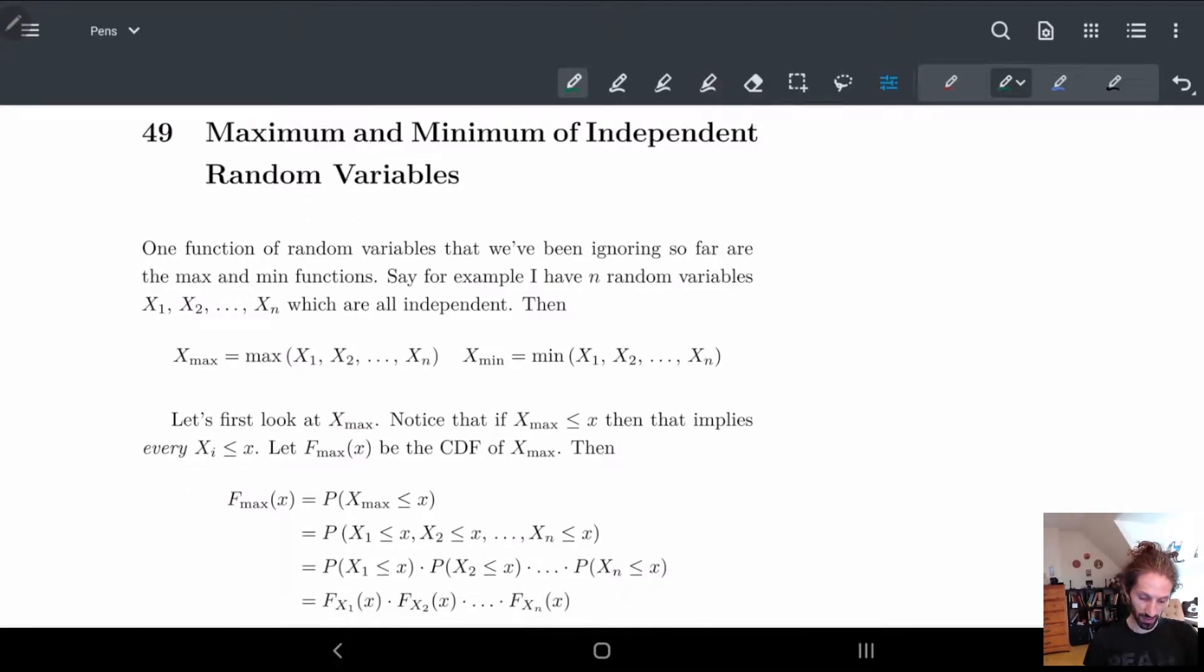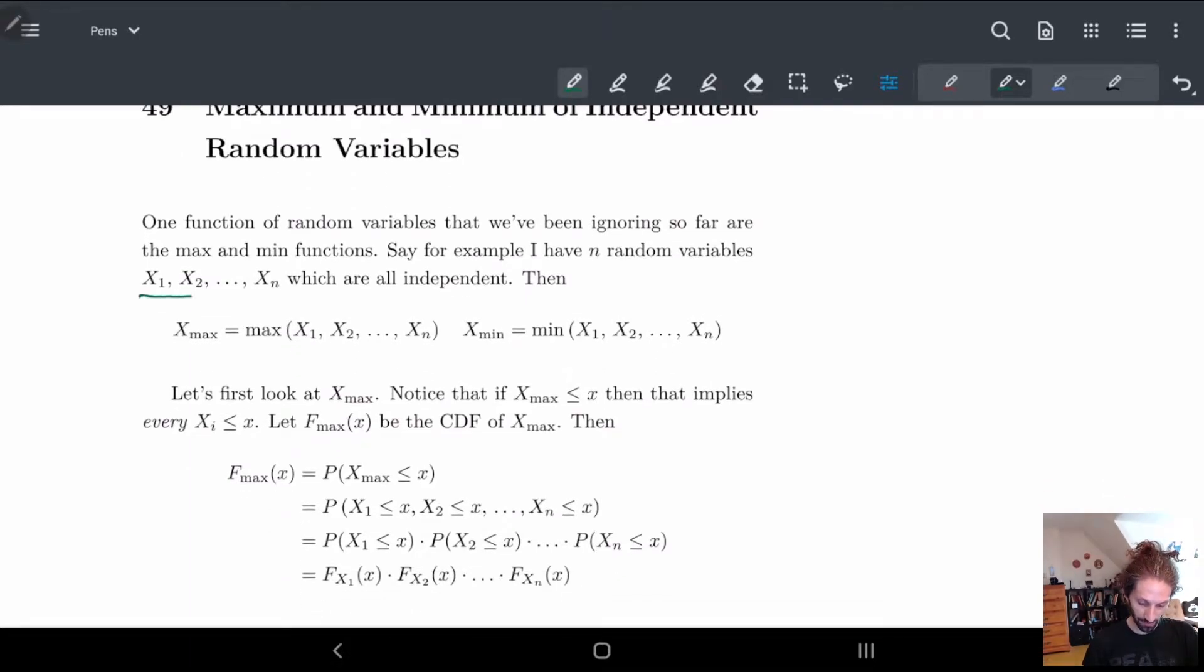So in other words, if I have n different variables, say I have n different variables here, x1 to xn, and they're all independent, then I want to know what the max of all the random variables are or the min. So this is kind of the next question that we're going to ask. Like what is the max, what is the min, and how do we calculate it?